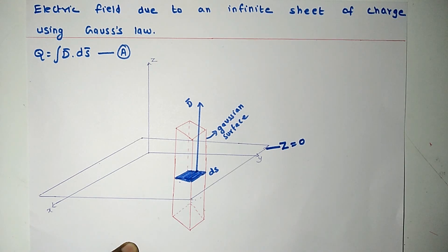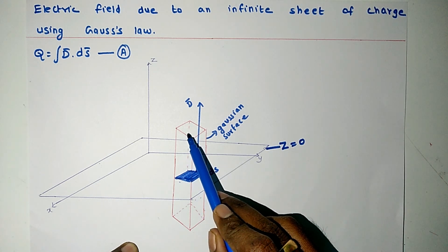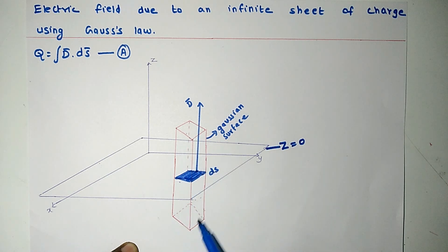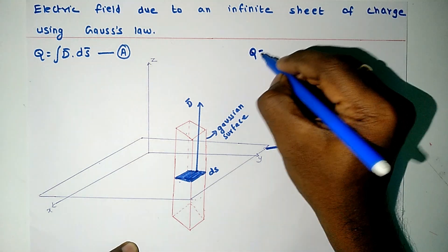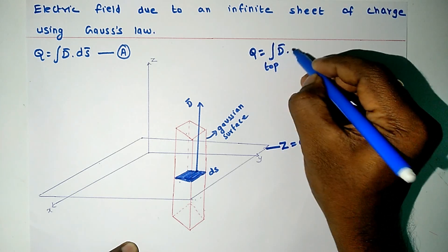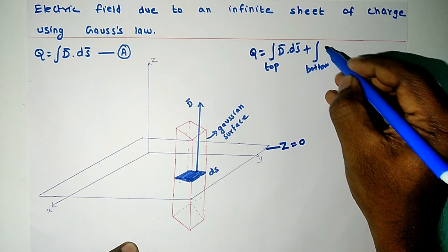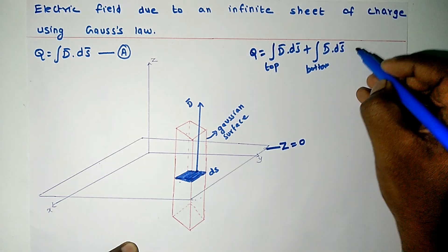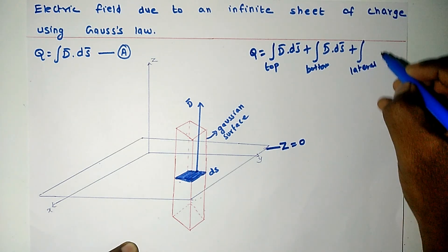To find out electric field density and electric flux density, we shall expand Equation A. As the Gaussian surface has three sides — the top side, bottom side, and the lateral side — we can expand Equation A as Q equals the integral over the top, plus the integral over the bottom, plus the integral over the lateral side.